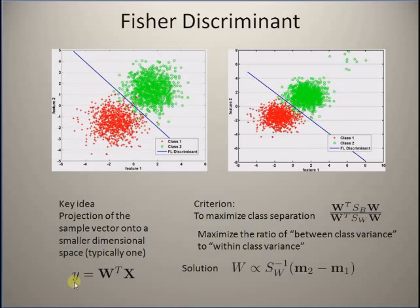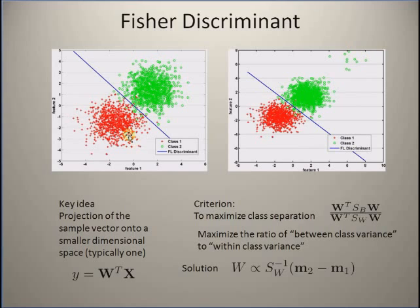The next problem is to find a threshold value against which y can be compared, to determine the class of a new sample vector. In these plots you can see that Fisher discriminant analysis actually works better in both conditions — when you have only Gaussian distributed data samples, and also when you have outliers in one of the classes. The number of green circles on the wrong side of the discriminant function is far fewer compared to the least squares method.